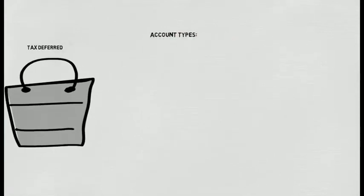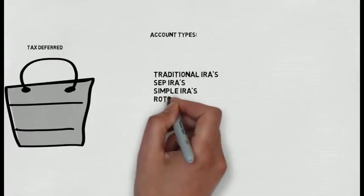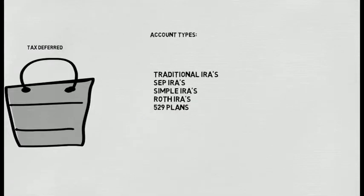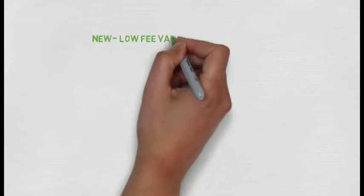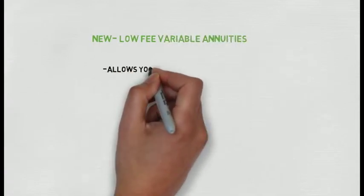If we decide on tax deferral accounts, there are many more accounts available to you than you're probably aware. There's traditional IRAs, SEP IRAs, simple IRAs, Roth IRAs, 529 plans, and now there are very low cost, new variable annuity products.